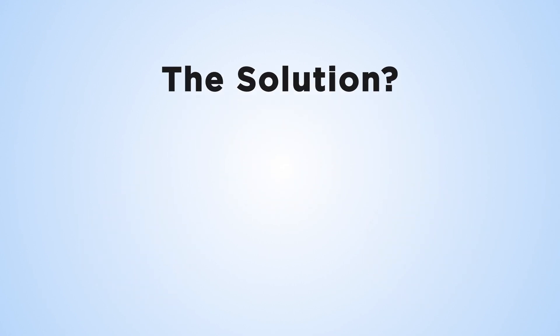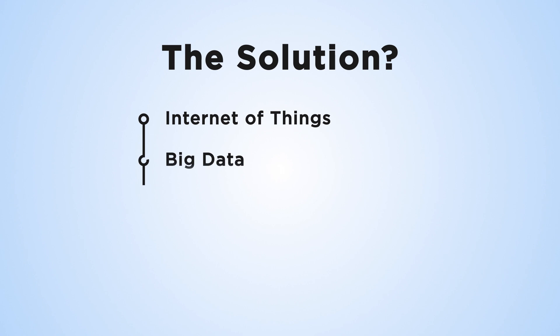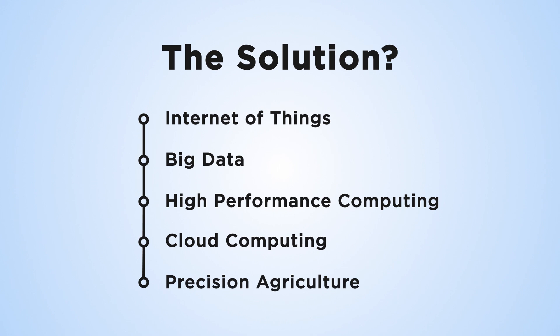The solution combines the Internet of Things, big data, high-performance computing and cloud computing technologies to create precision agriculture services – innovation solving real-world problems within the agricultural industry.